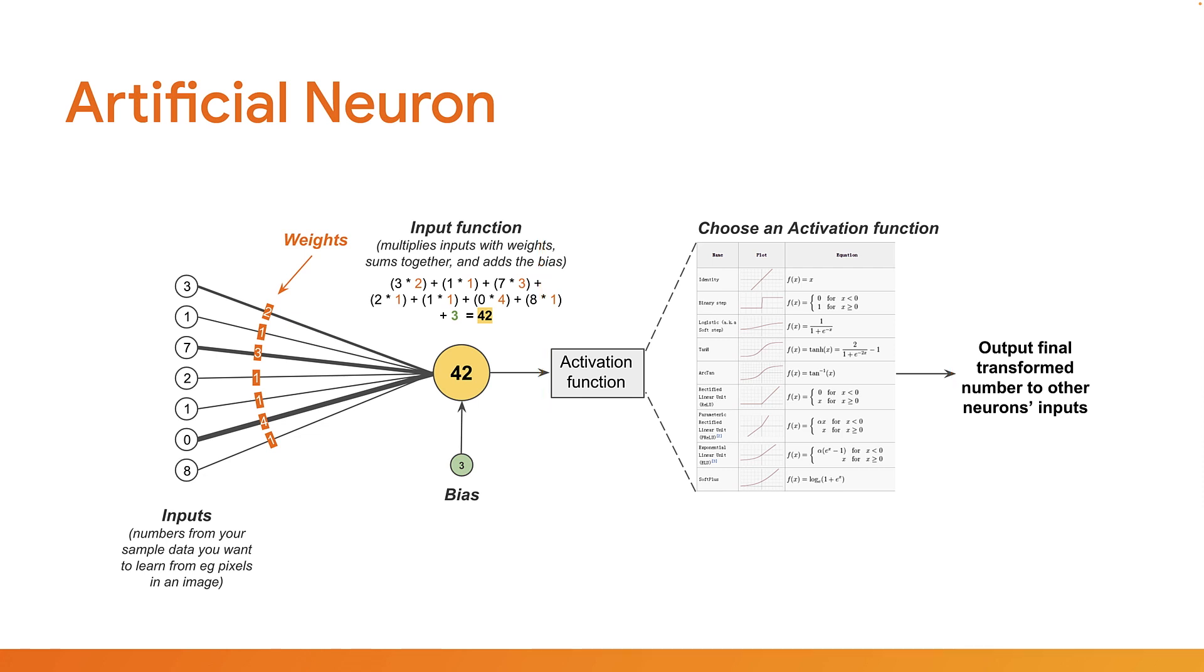In the case of a perceptron, the activation function simply outputs a 0 or a 1 depending if the total is above or below some threshold. It's this property that makes a perceptron a perceptron versus some other type of neuron that may produce different outputs. Essentially a perceptron turns the inputs into a binary output.